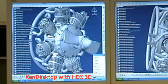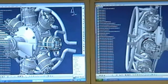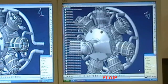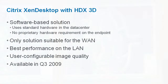This side-by-side demo compares HDX 3D with PC over IP on a WAN with 100 milliseconds of latency. HDX 3D is a software-based solution that does not require proprietary hardware either on the host or endpoint device, and works with commonly available GPUs. As demonstrated, it is the only product available that is truly suitable for graphic-intensive remote workers. Even on a LAN, it provides the best performance with the lowest bandwidth consumption.